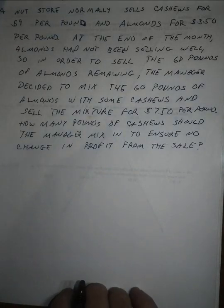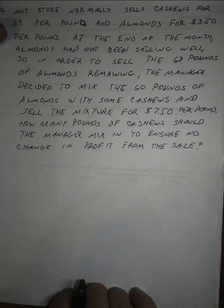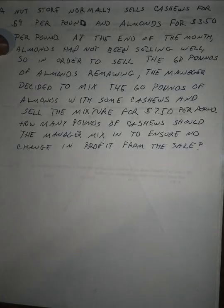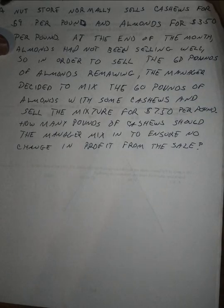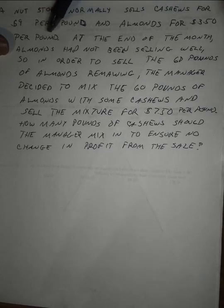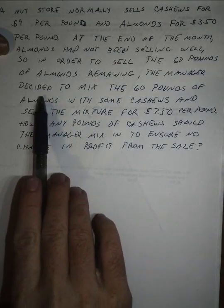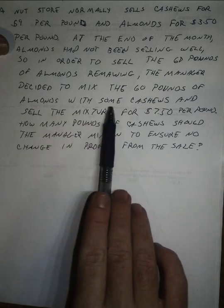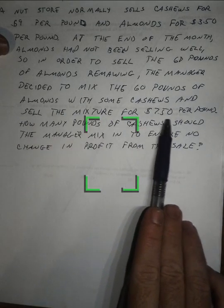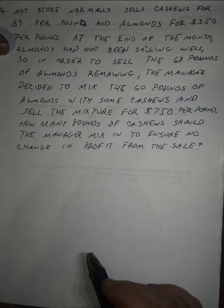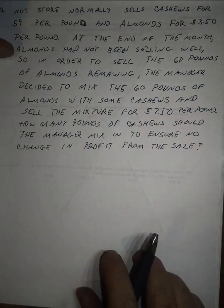As I promised in class, I wanted to work through a mixture problem using the chart that helps you set up the equations for solving these things. I've copied down a sample problem from your book — problem 33 or 23. It's a nut store that normally sells cashews for $9 per pound and almonds for $3.50 per pound. At the end of the month, almonds hadn't been selling well, so to sell the 60 pounds remaining, the manager decided to mix them with cashews and sell the mixture for $7.50 per pound. How many pounds of cashews should the manager mix in to ensure no change in profit?